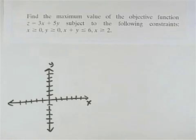Find the maximum value of the objective function z equals 3x plus 5y subject to the following constraints.